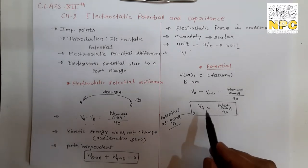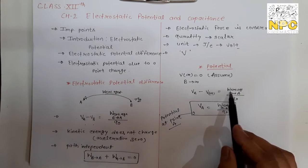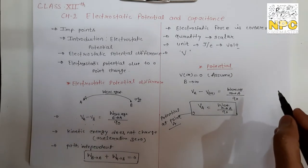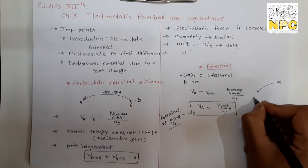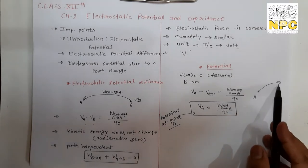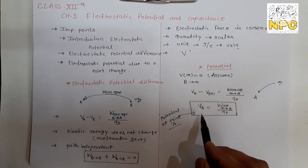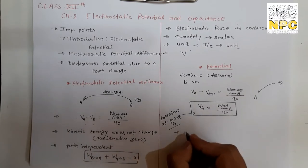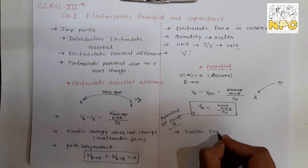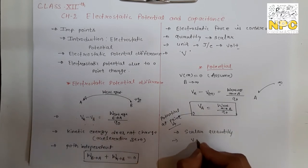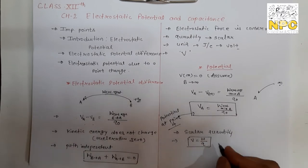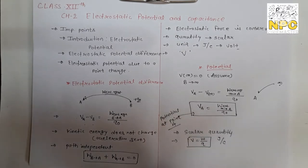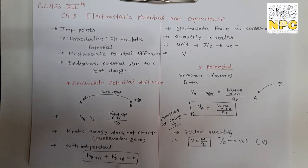So the definition of potential at a point: potential at a point is equal to the work done by the external agent in moving a unit positive charge from infinity to that point. The unit is the same — joules per coulomb, which is volt, denoted by capital V. Now we will calculate the electrostatic potential due to a point charge.